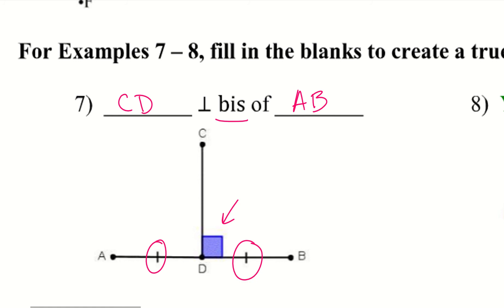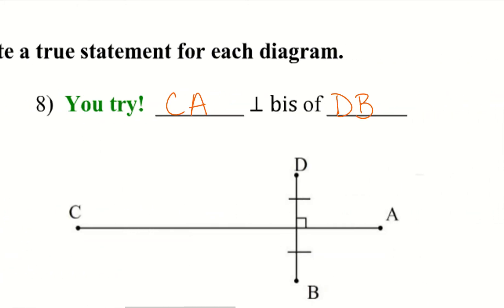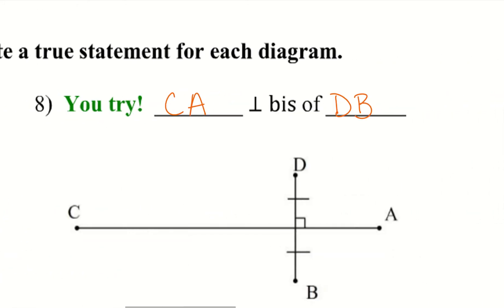Go ahead and try number eight. Looking at it together: CA is the perpendicular bisector of DB. We have the two dashes to show those are congruent — that's the line being bisected — which is why DB is on the outside and not done first.